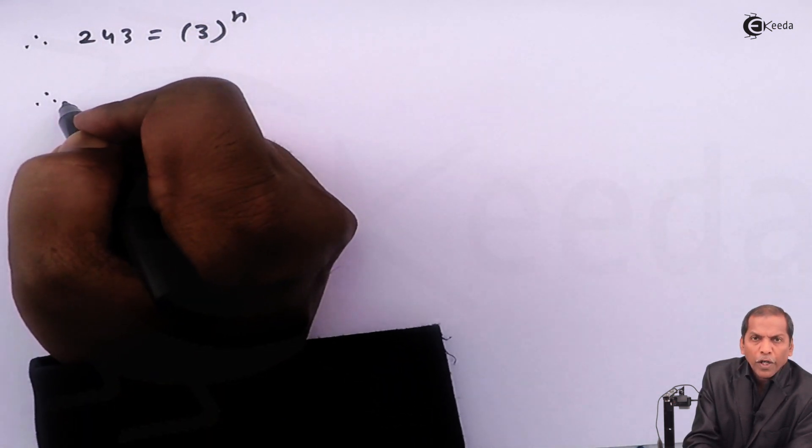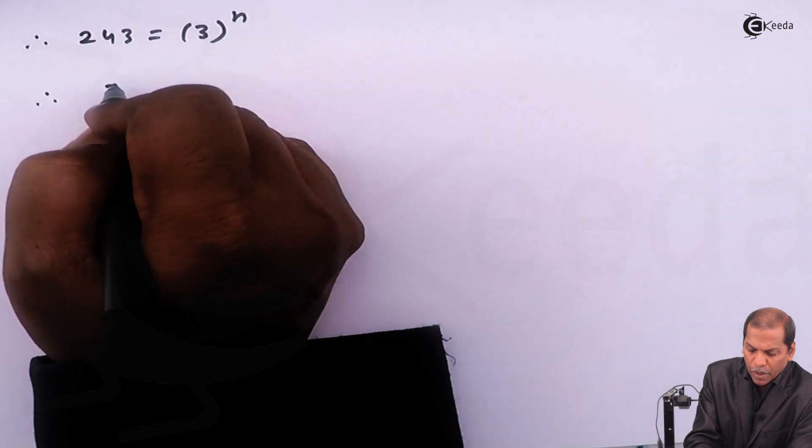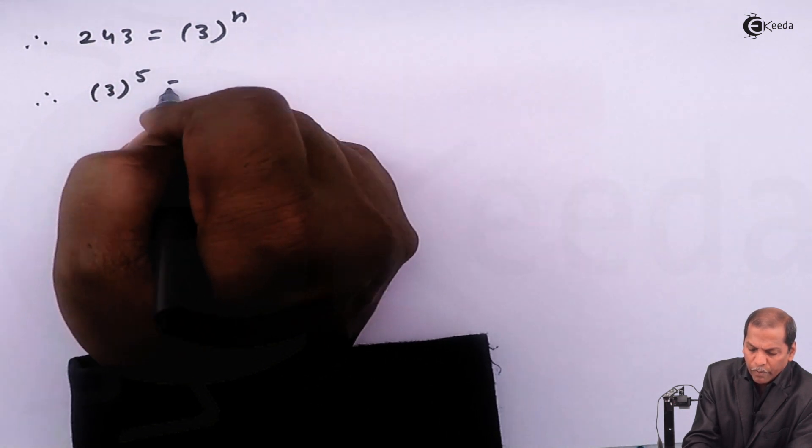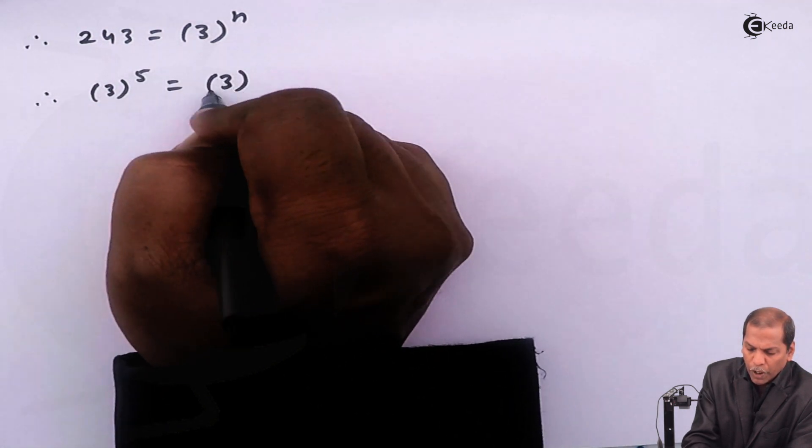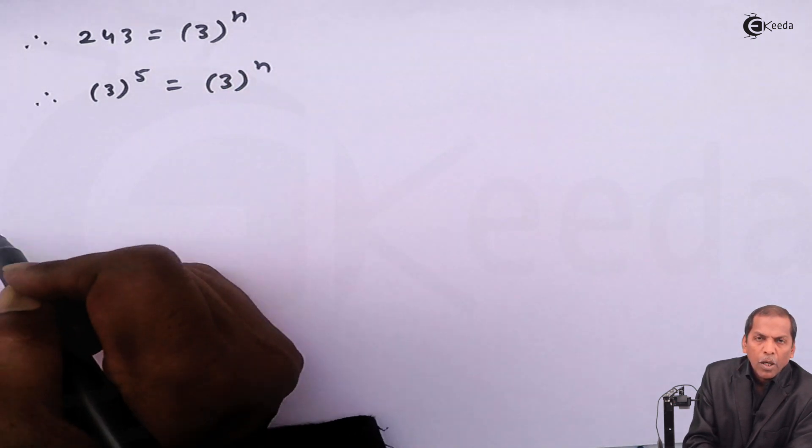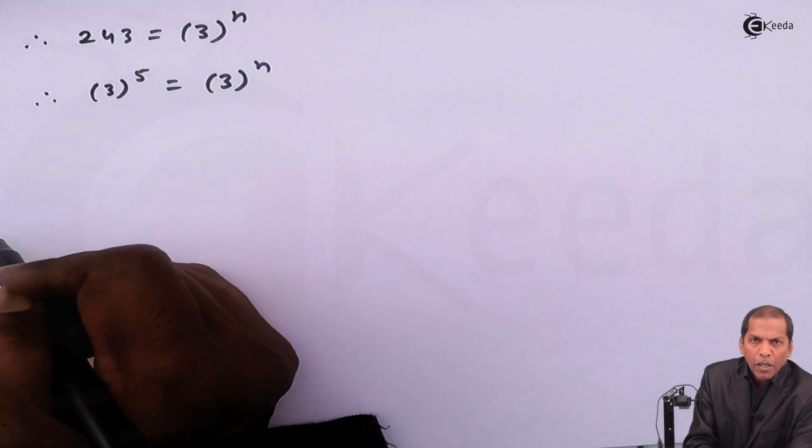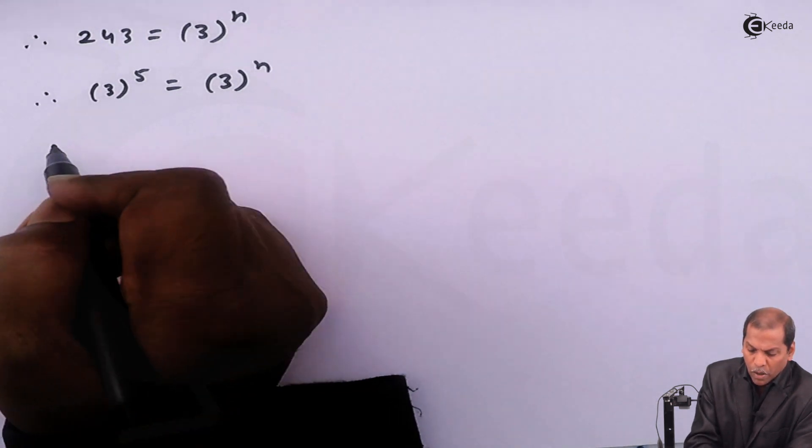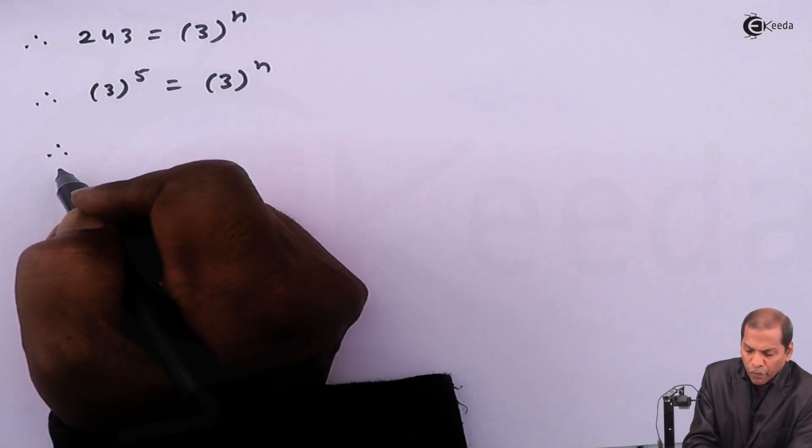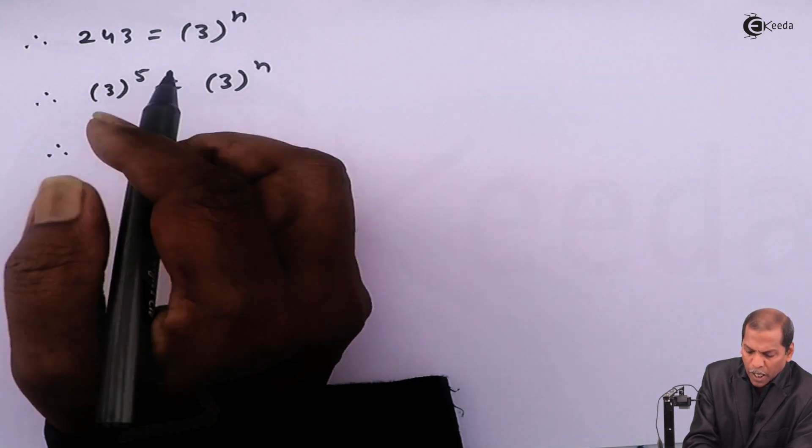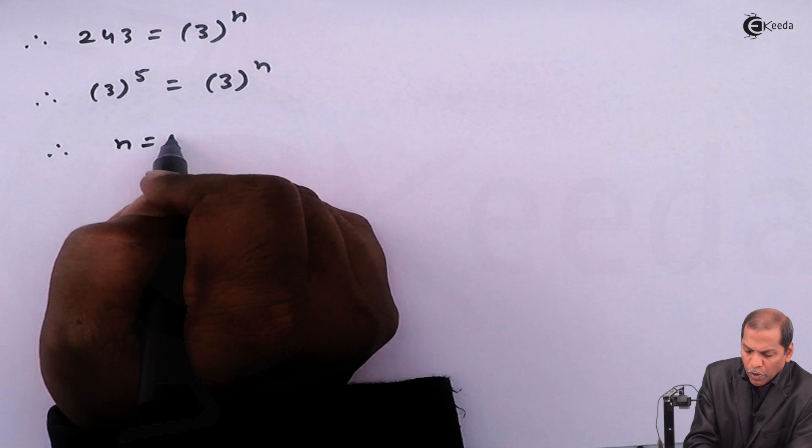Now 243 can be written as 3 raise 5, and that equals 3 raise n. Since the base of two indices are same, therefore we can equate power. That is, n is equal to 5.